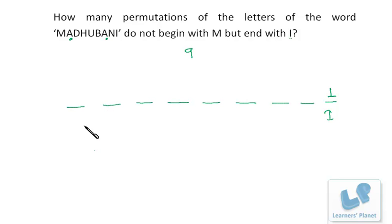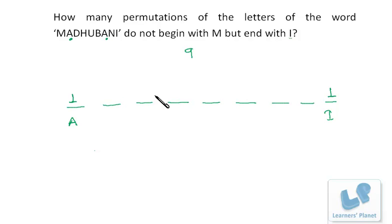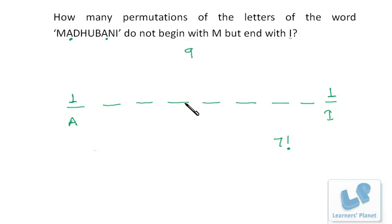Out of these seven choices, we have two A's, so we take two cases. Case one: the first position is occupied by A. That means we have just one choice for the first position. The remaining seven places have seven letters with no repetition — only one A remains — so there are seven factorial arrangements.